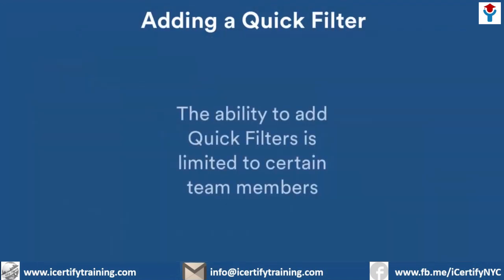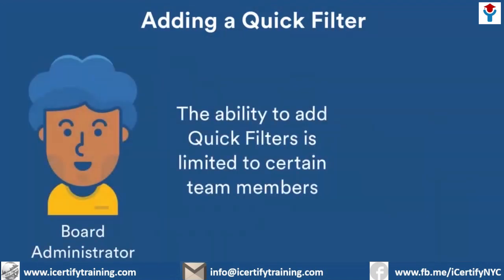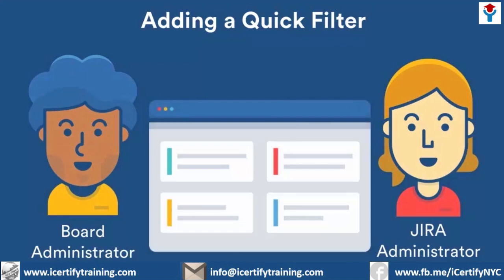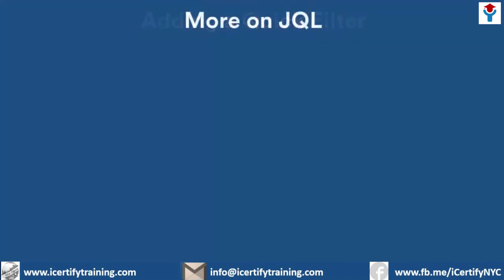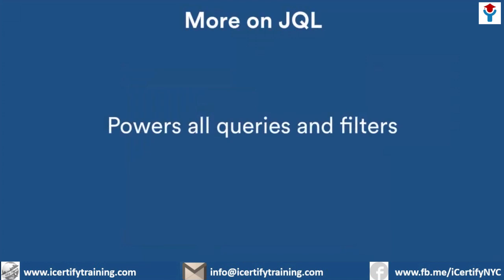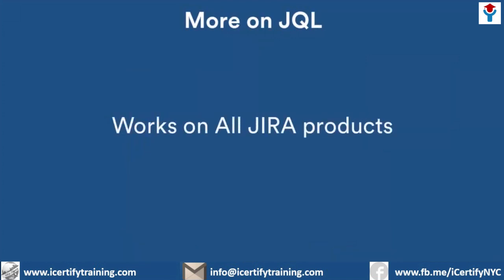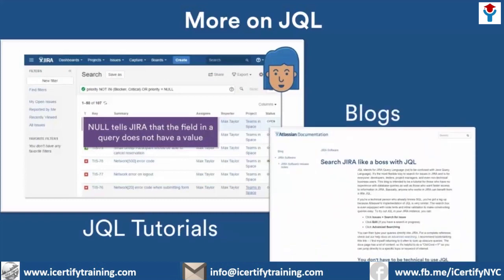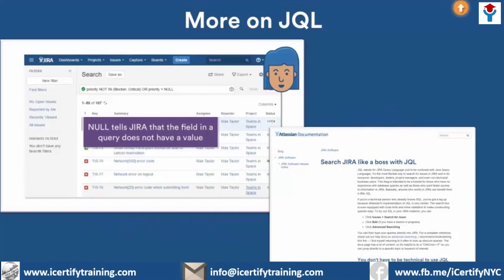Creating quick filters is a restricted operation — the board administrator or Jira administrator creates them. If anyone could create a quick filter, your board could become littered with them, making distinguishing between them pretty difficult. Jira Query Language is a search language that searches for issues. It's the engine that powers all queries and filters in Jira Software, and works across all Jira products. If you're interested in learning more about JQL, explore our series of tutorials on using Jira Query Language, or check the documentation and Atlassian blogs. Click the resources link for more information.